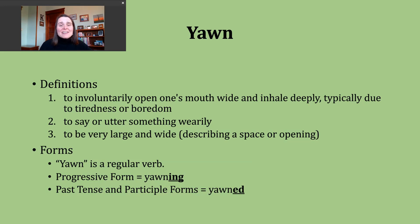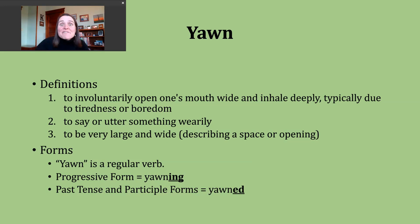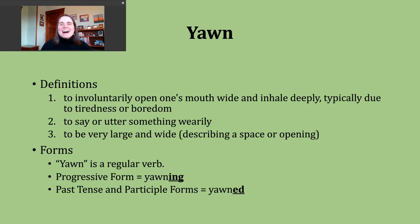A third way to use the verb yawn can mean to be very large and wide. This is typically describing some type of space or opening. I've seen this used in literature and storytelling, where writers or authors are trying to convey to their readers that something is very large and wide. So it might be something like 'the chasm yawned,' to help us envision that very wide open space.